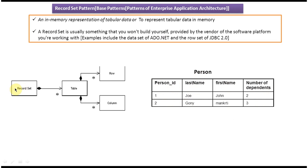As you can see in this diagram, the table has rows and columns. Taking the Person table as an example, using a Record Set we can represent this Person table information in-memory. From the Record Set, you can then access Joe's person information or Goni's person information.